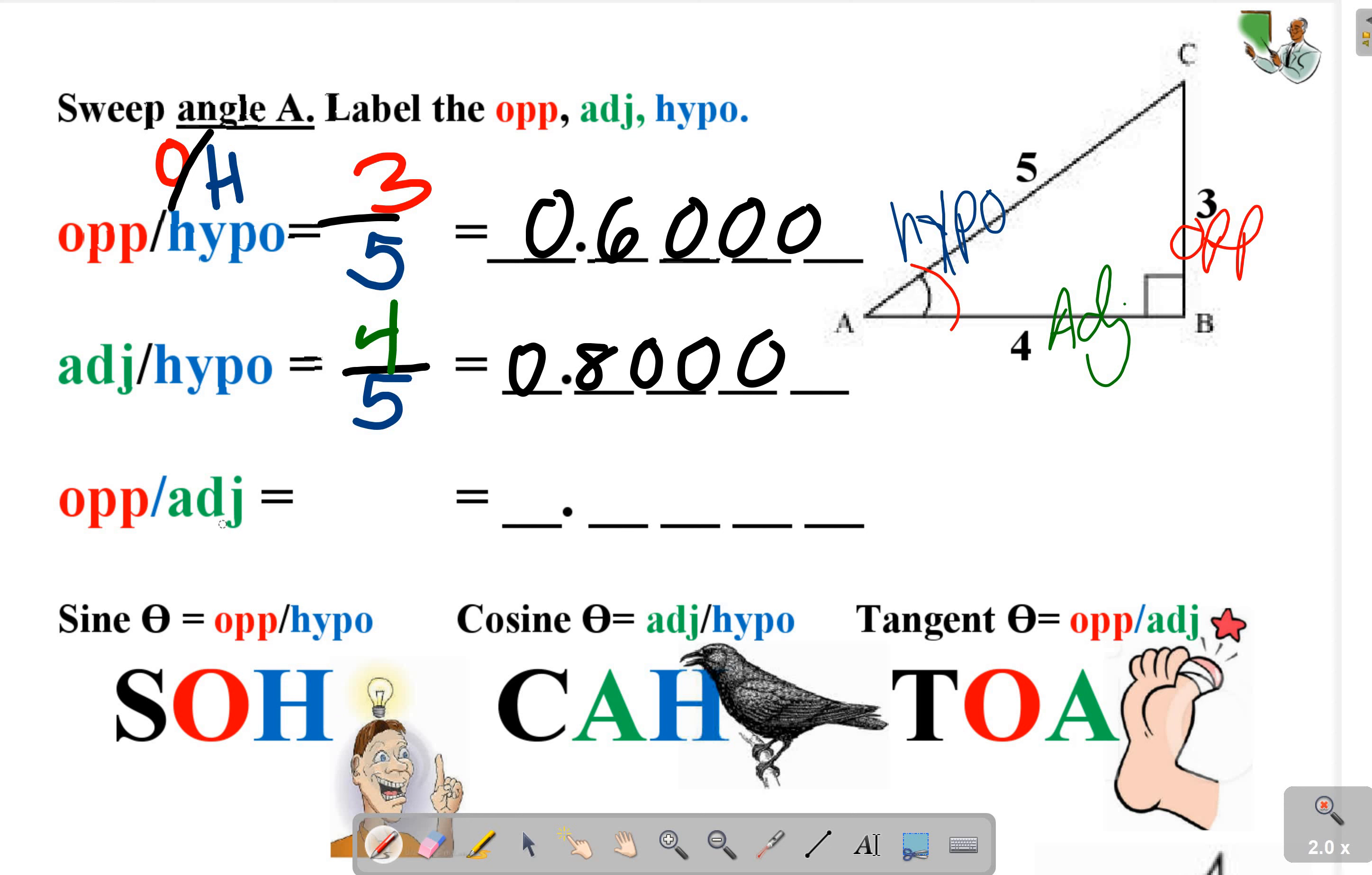Then we have opposite over adjacent. In this case our opposite is 3, our adjacent is 4, and that's 75 cents.